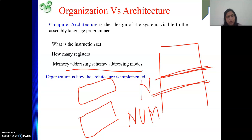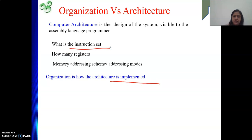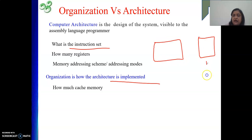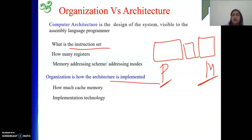Next is organization. In layman's terms, organization is how we are going to realize a particular architecture — how the architecture is implemented, how you get the work done. For example, how much cache memory is there? Cache memory is a faster memory between the processor and main memory, since main memory is slower compared to the processor. Also, implementation technology — whether you are using CMOS or another technology — comes under organization.